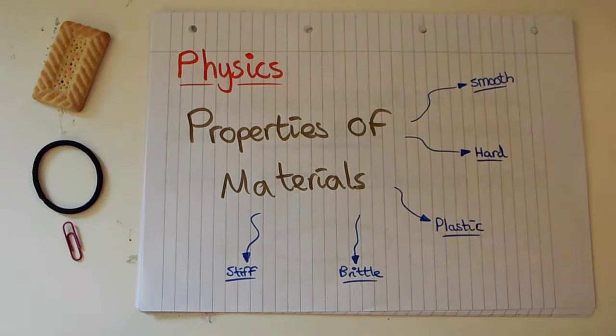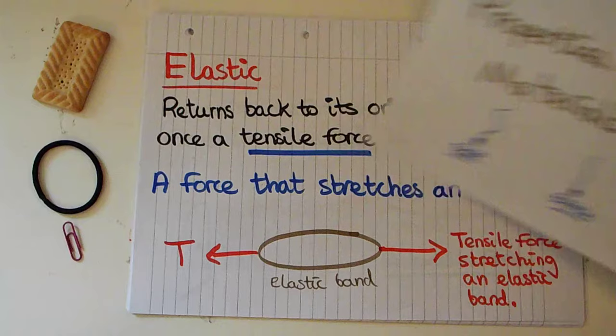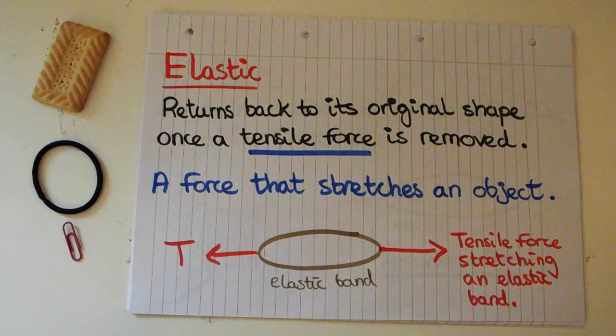Hi, my name is James and in this physics video I'm going to be going over some of the basic definitions of different properties of materials. Our very first one is the definition of elastic, and this is a property where something will return back to its original shape once a tensile force is removed.